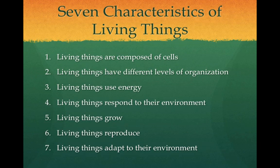All living things have the following seven characteristics. Number one, living things are composed of cells. Even single-cell organisms have everything they need to be self-sufficient. Number two, living things have different levels of organization. Living things organize cells at different levels, from tissues to organs to organ systems to an organism.